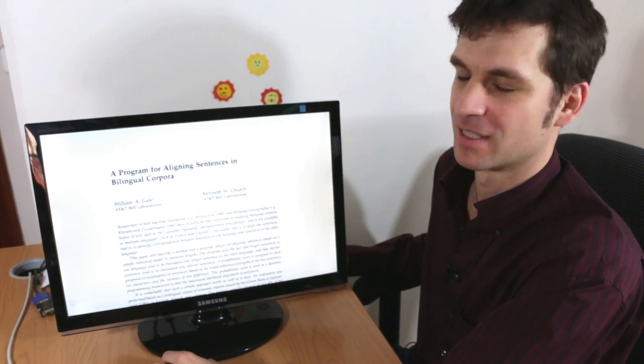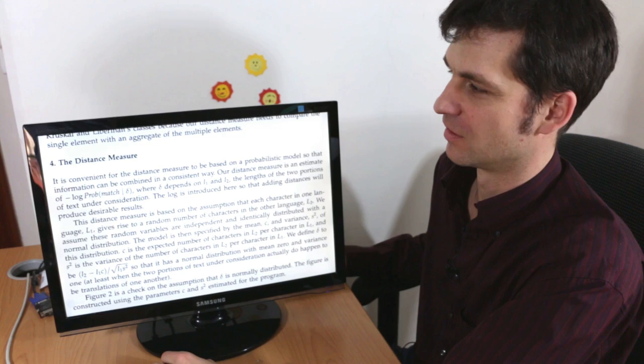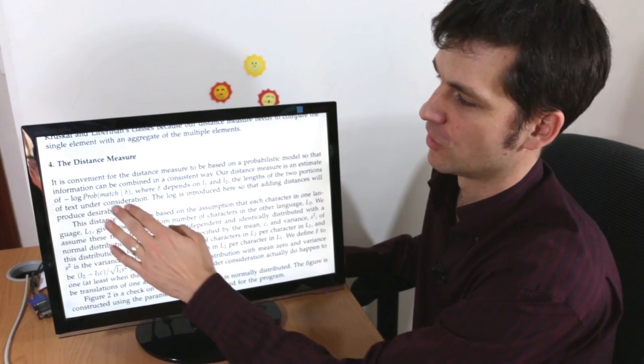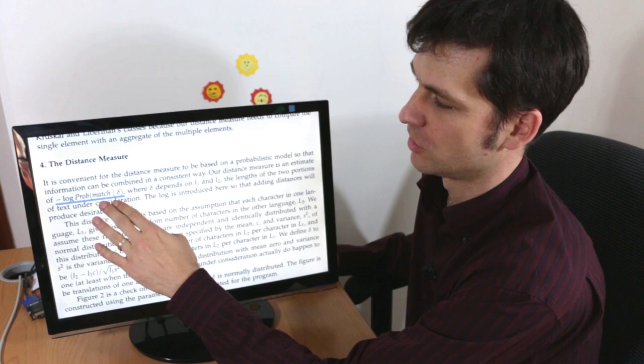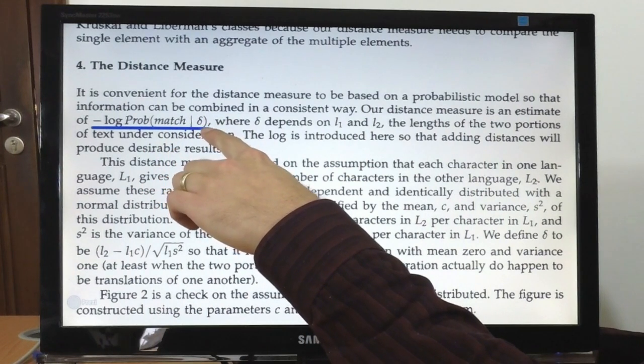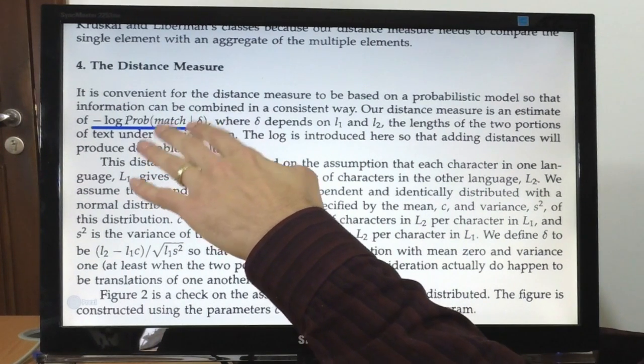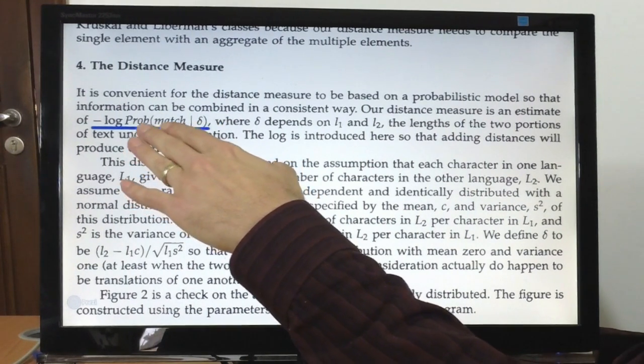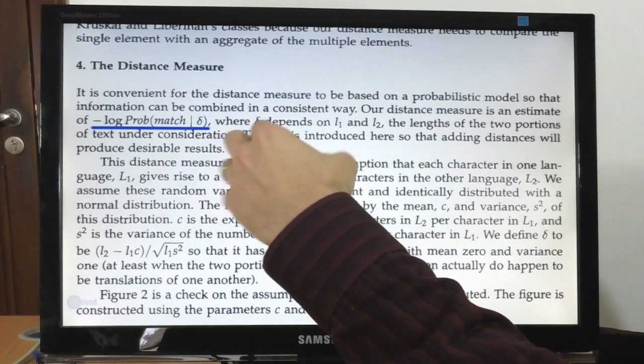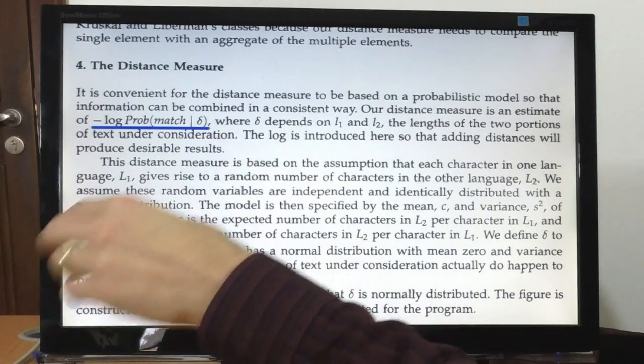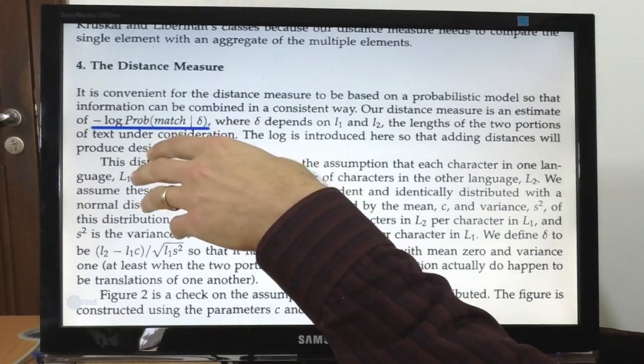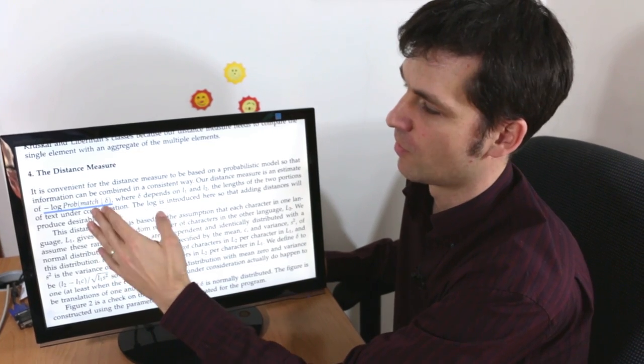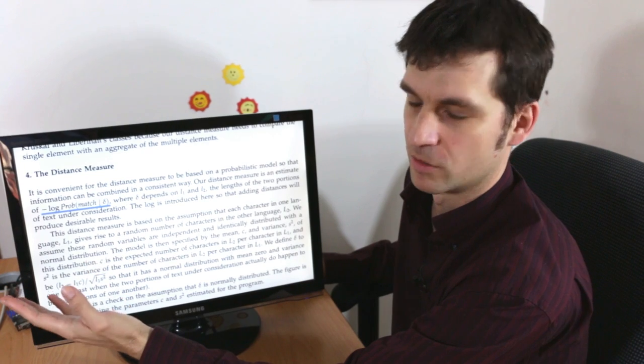Gale-Church defined the distance measure using the probability of two segments being a good match given their difference in length, the delta. And to convert the probability to a distance measure we need to take the log of that because we'll be summing these values along the path in the dynamic search style. And we also need to take the negation of that because the higher the probability of the match the lower should be the cost in the search.